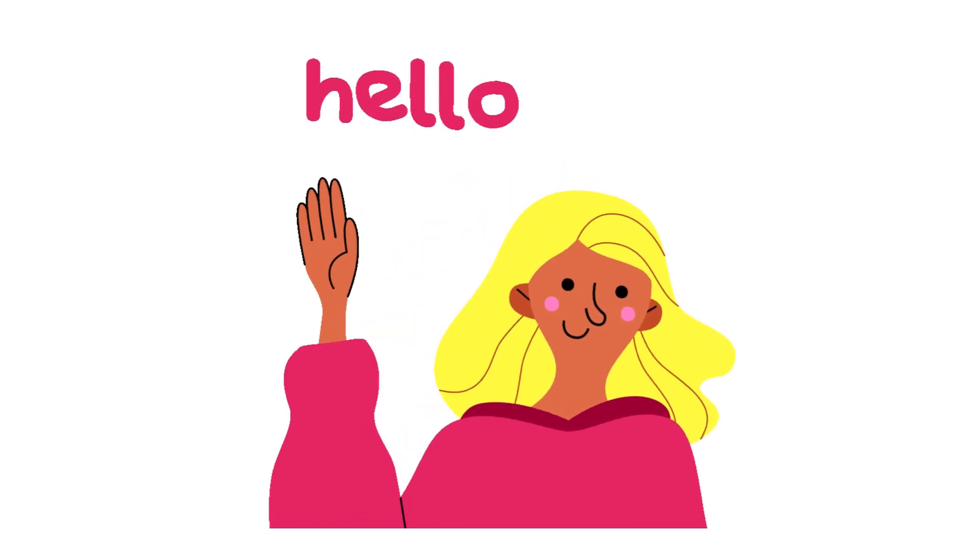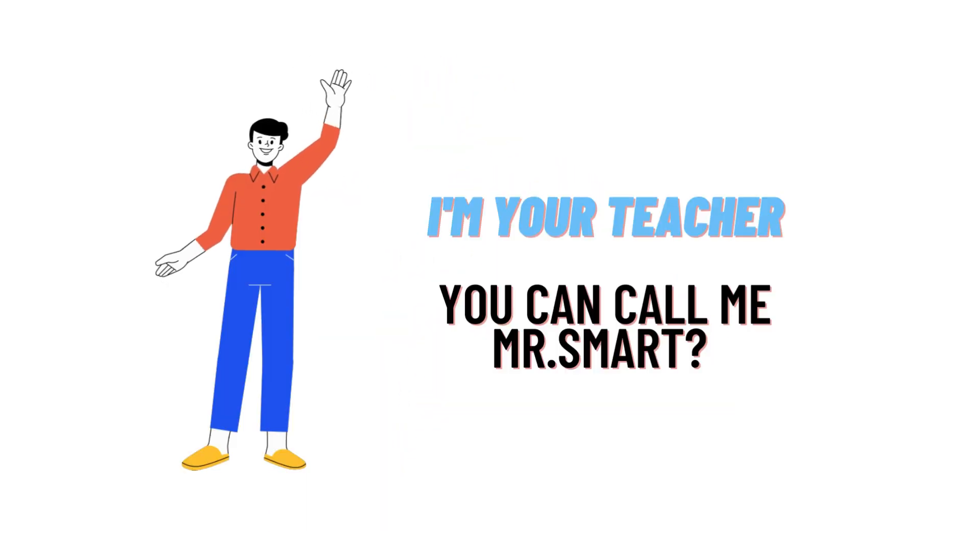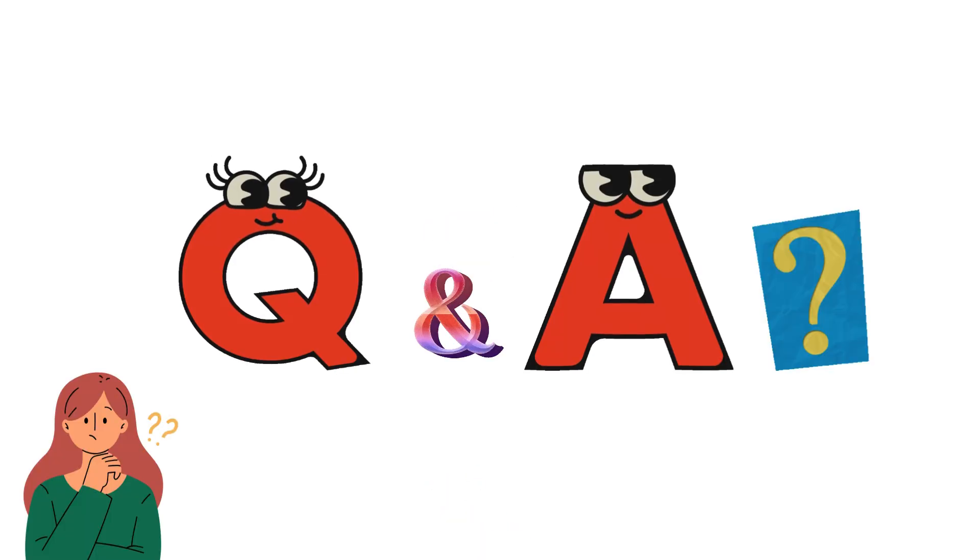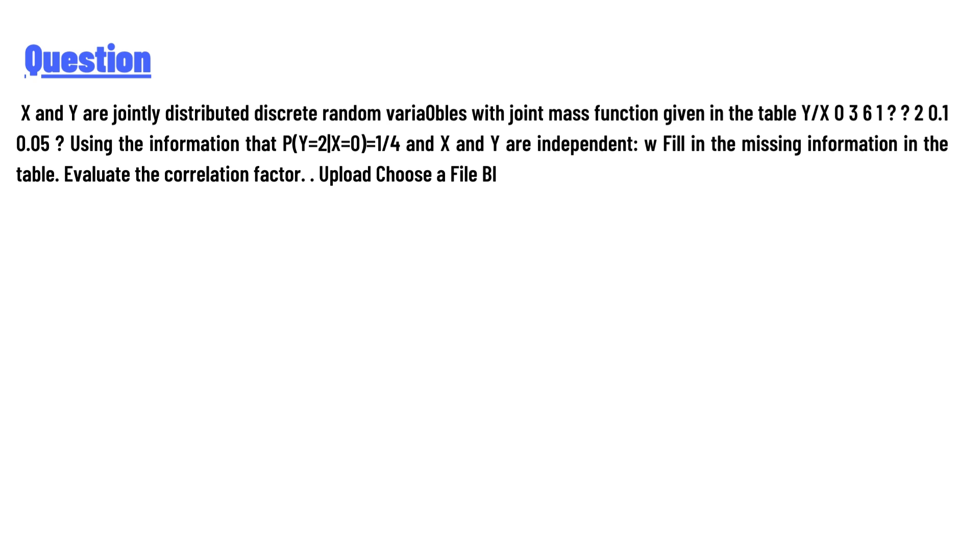Hello everyone, how are you? I am Akrash, your teacher here, and I will teach you different questions and their answers. So I welcome you on class twitter.com. Our today's question is: X and Y are jointly distributed discrete random variables with joint mass function given in the table.